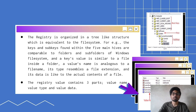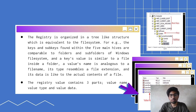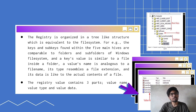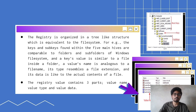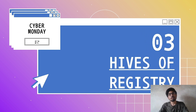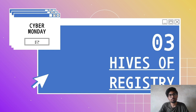Each sub-key has certain values. Those values also have 3 parts: by what name that value is saved, what type of value it is, and how much data is in that value's data field. These are the 3 main parts. Now let's study those important hives that come at the top class — the top 5 hives.